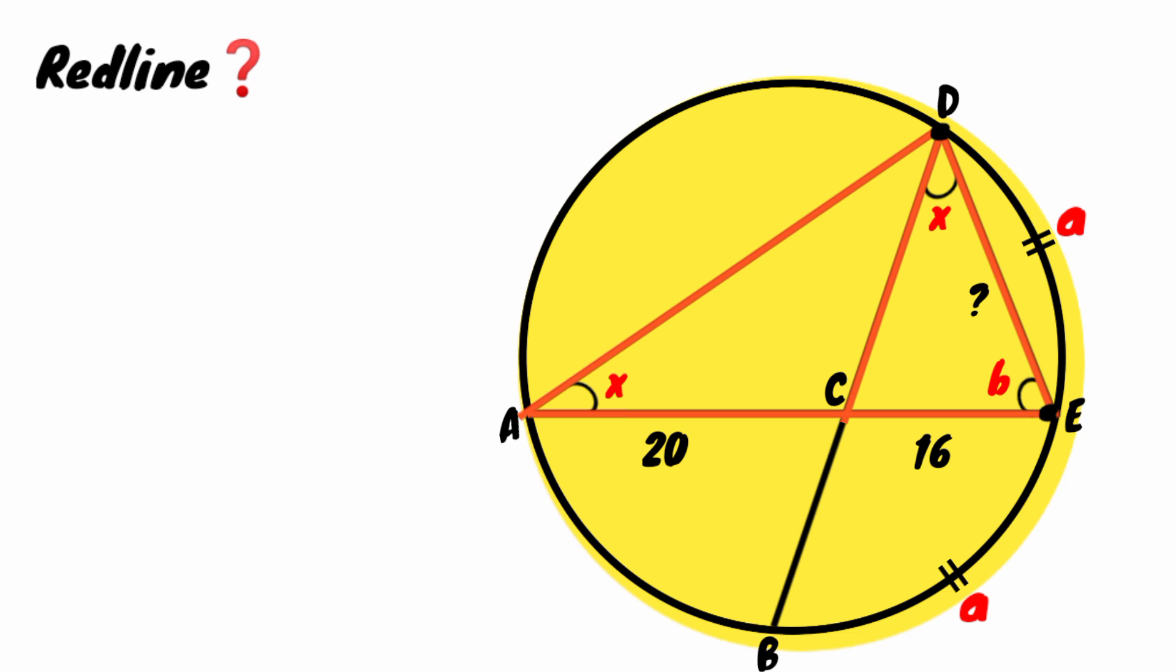So if we take the ratio of their sides in triangle ADE, this side facing angle x, say h, divided by this side must be equal to this side also facing angle x divided by this. So h over 20 plus 16 equals 16 over h. 20 plus 16 is 36.